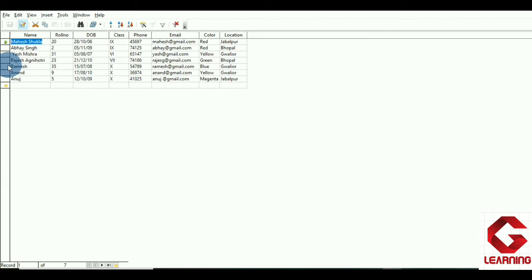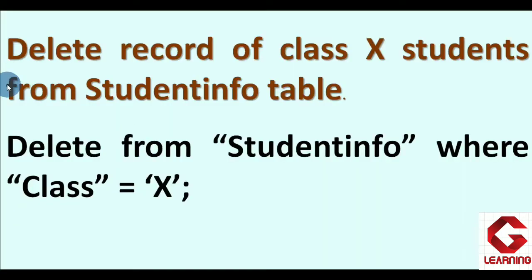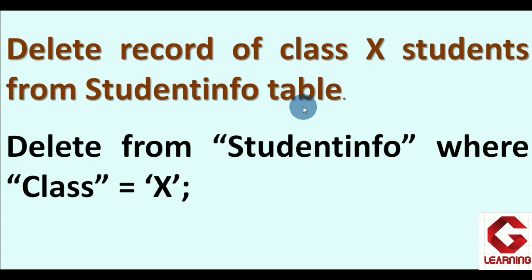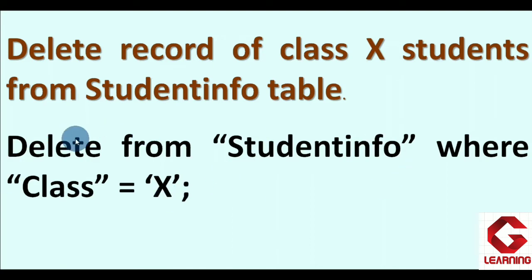We can also use the DELETE command to delete two or more records. To explain this, here is another situation: delete the records of all class 10th students from the student_info table. The command for this is: DELETE FROM "student_info" WHERE class = 10; This will delete all records where the class column value is 10.